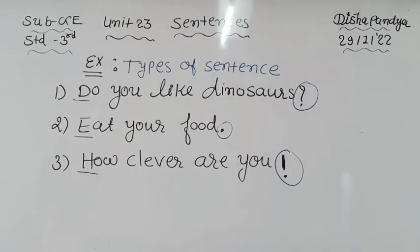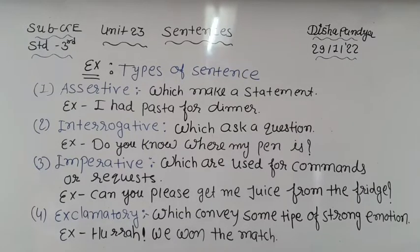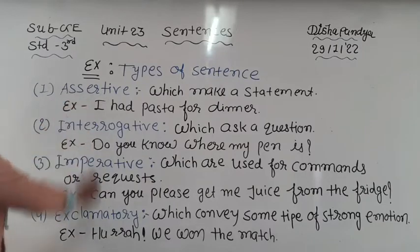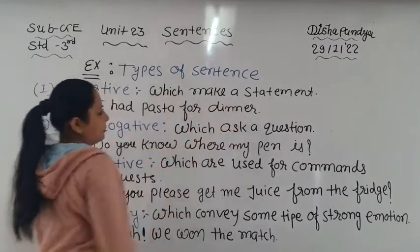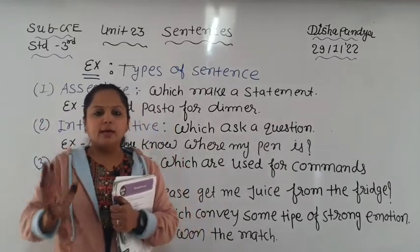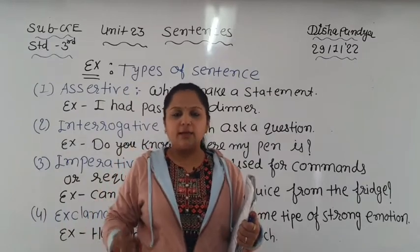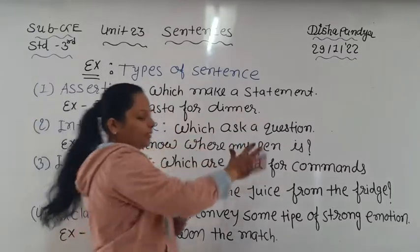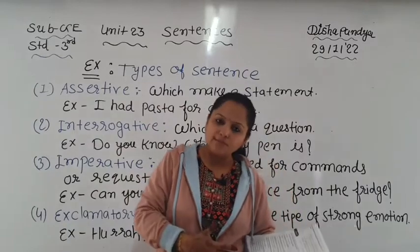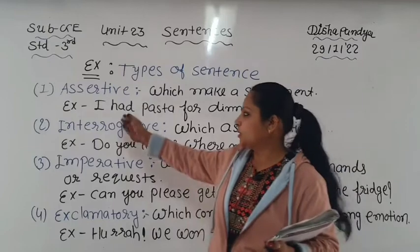So those were three types of sentences. Now we will learn more about types of sentences. First: assertive - which makes a statement. A statement can be positive or negative. If 'not' is not used, it is positive; if 'not' is used, it is negative. For example: 'I had pasta for dinner' - this is a positive assertive sentence, starting with a capital letter and ending with a full stop.